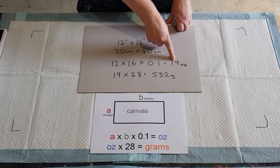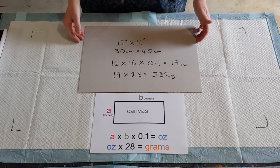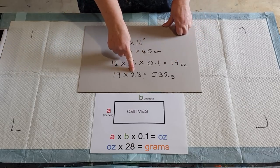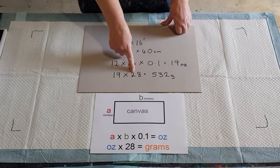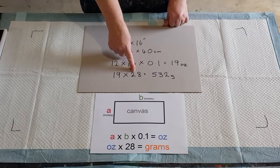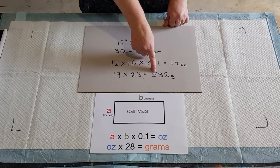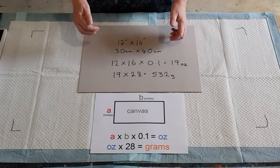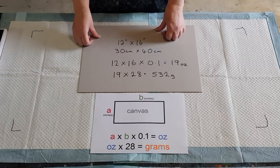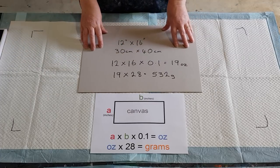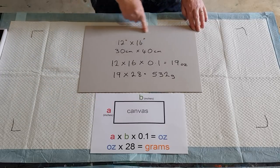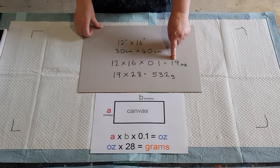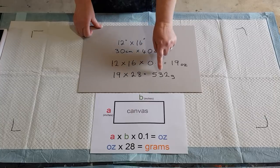Now if you need to convert that to grams, just convert the 19 times 28 because there are 28 grams per ounce. So 19 times 28 will give you 532 grams, so you know roughly you're going to need about 530 grams. I would tend to round up and maybe go 550 grams just to be on the safe side. So one side times the other side times 0.1 will give you your ounces, and then for grams times that ounce by 28 to give you your grams.